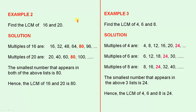Example 2. Find the LCM of 16 and 20. Solution. The multiples of 16 are those numbers. The multiples of 20 are those numbers. The smallest number that appears in both of the above lists is 80. Hence the LCM of 16 and 20 is 80.